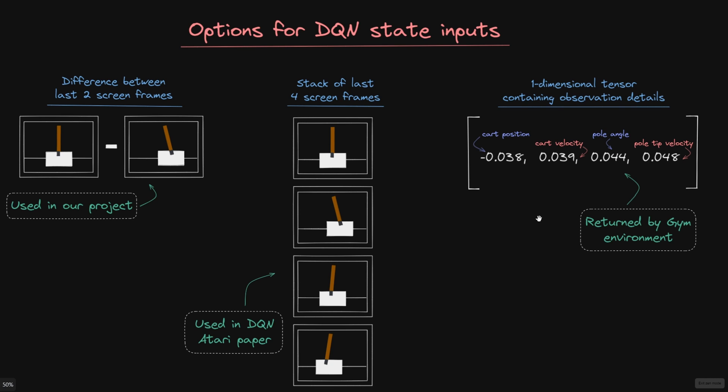The cart and pole OpenAI gym environment, as yet another example, returns the environment states which are going to be passed as inputs to the DQN as a one dimensional tensor that contains the cart position, the cart velocity, the pole angle, and the velocity of the pole at the tip. As we can see, the states returned by the gym environment here are much more simplistic than the pixel data that we have been working with or the pixel data that was used in the Atari DQN paper.